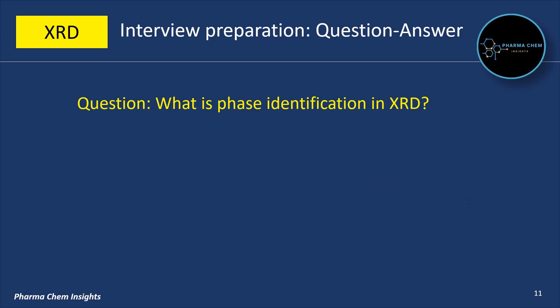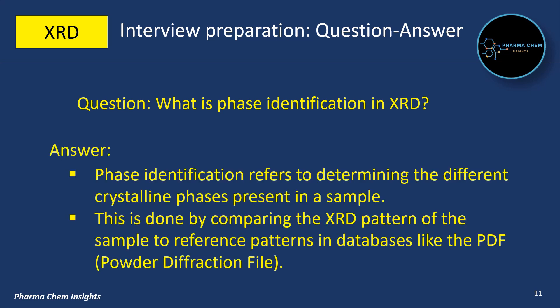Next question: what is phase identification in XRD? Phase identification refers to determining the different crystalline phases present in a sample. This is done by comparing the XRD pattern of the sample to reference patterns in databases like the PDF (Powder Diffraction File).